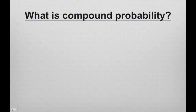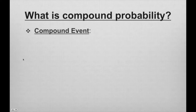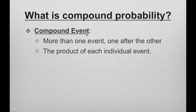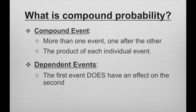So what exactly is compound probability? Well, compound probability is probability that consists of compound events. A compound event is when you have more than one event, where one occurs right after the other. It's basically just the product of each of the individual events. Dependent events are events where the first event does have an effect on the second. Independent means they do not affect each other, but dependent means that the first event will change the second event.